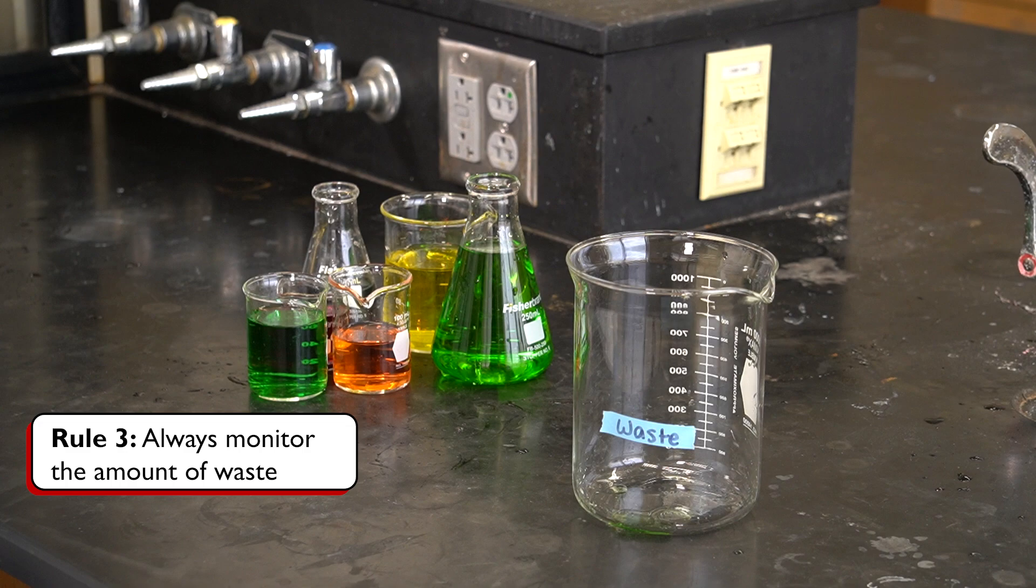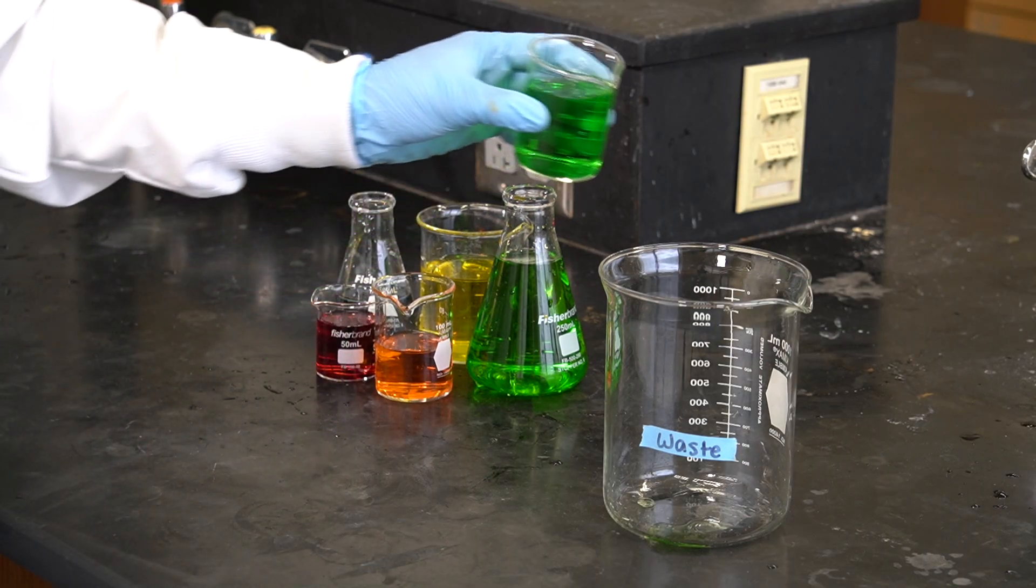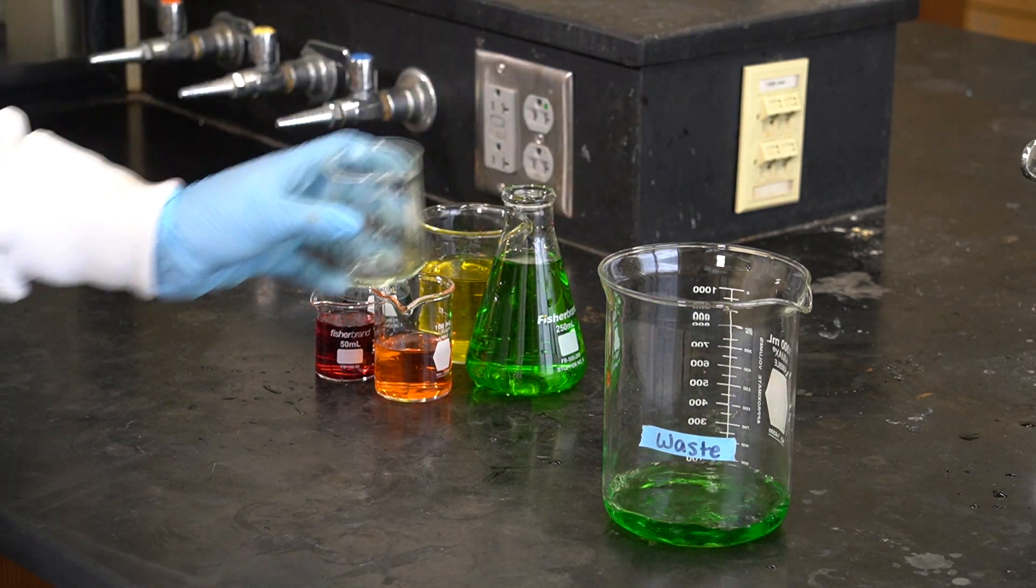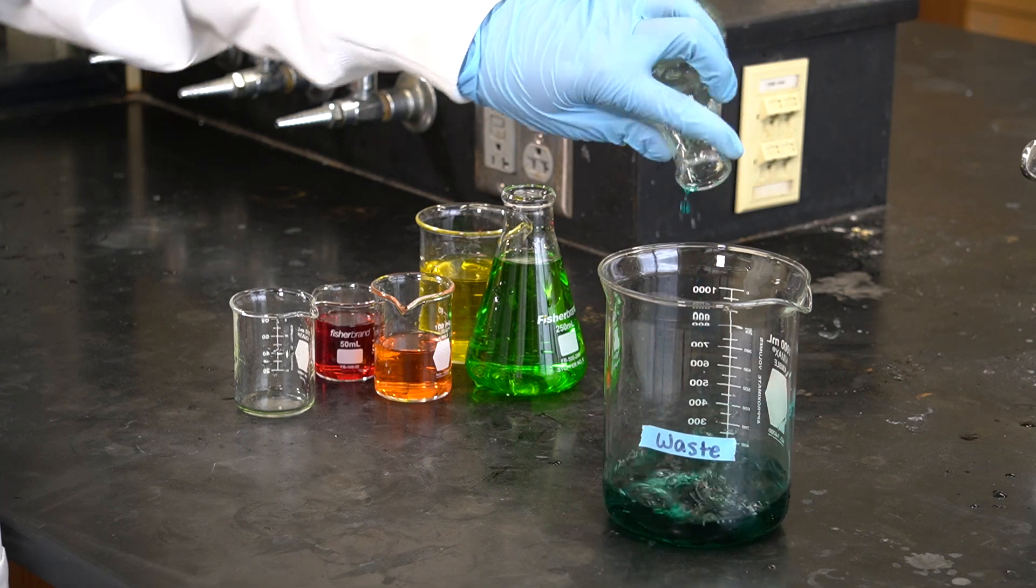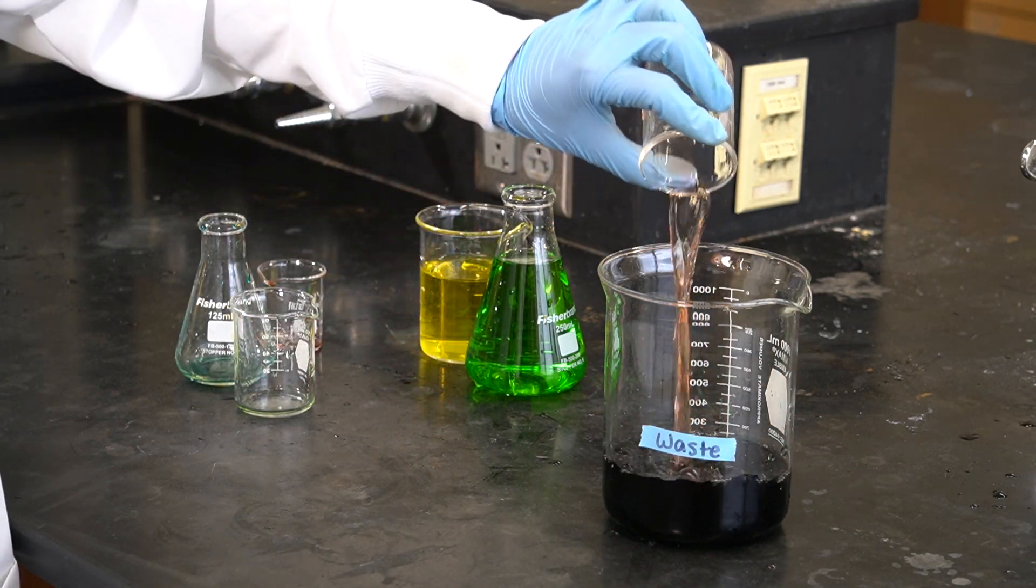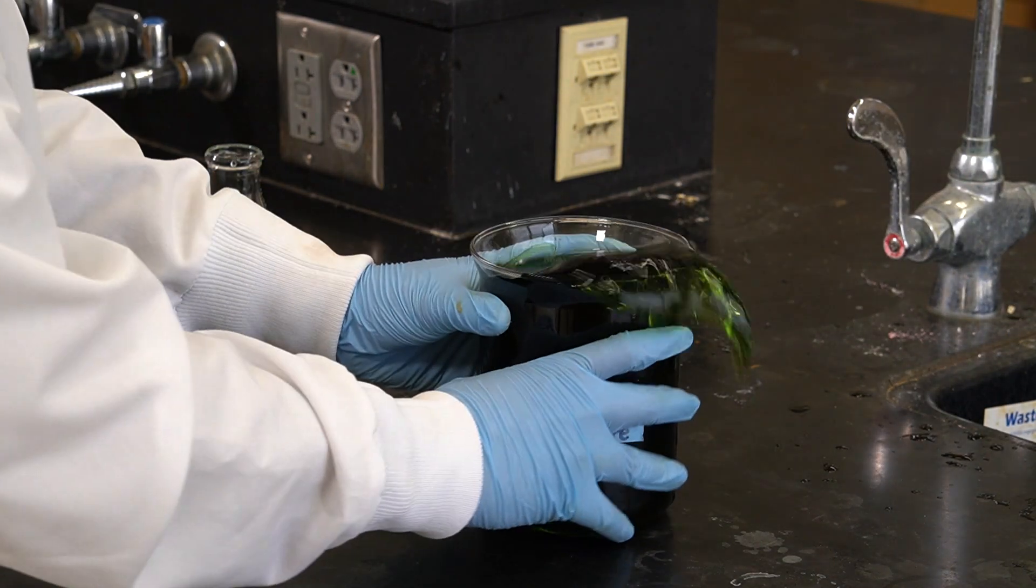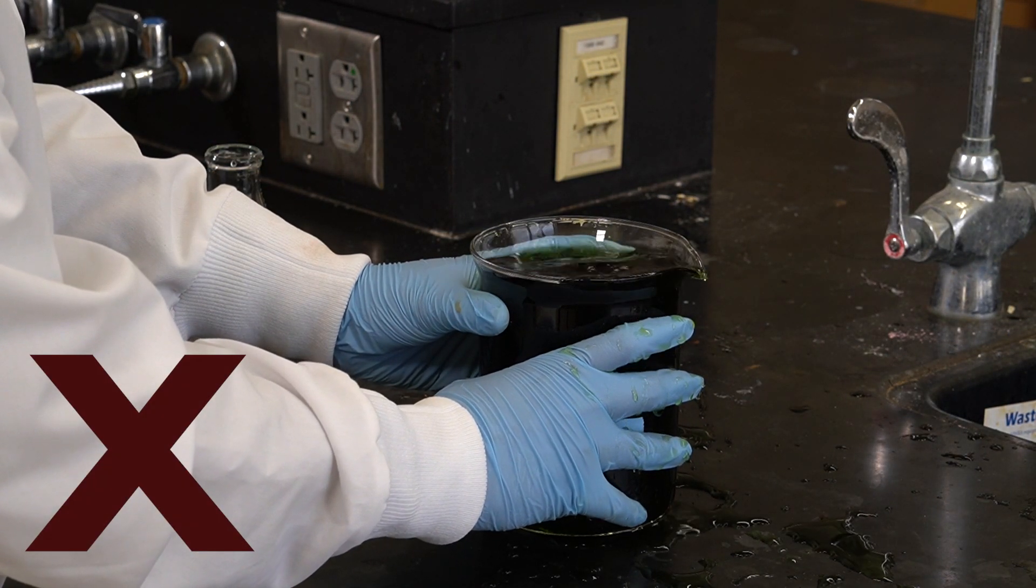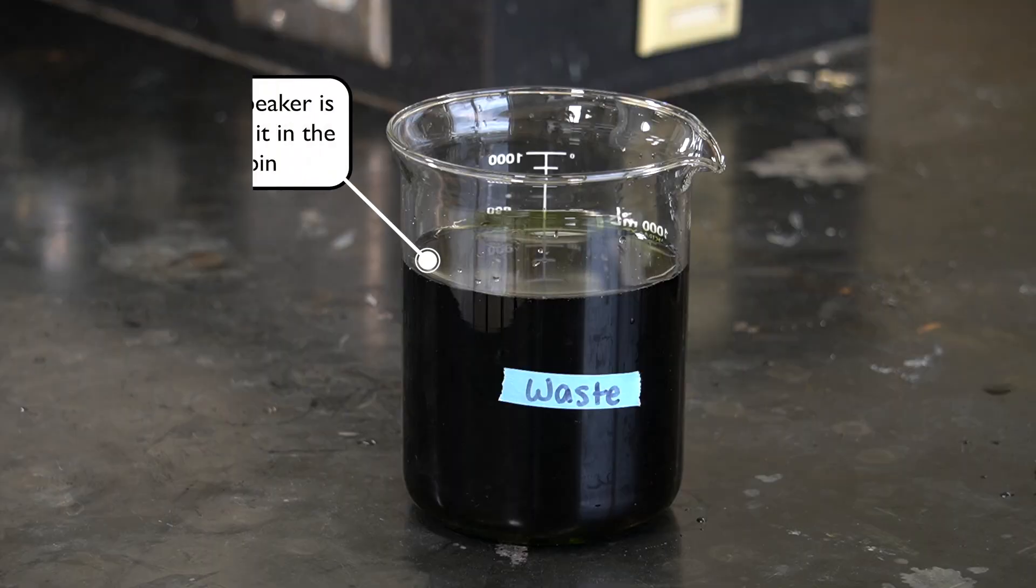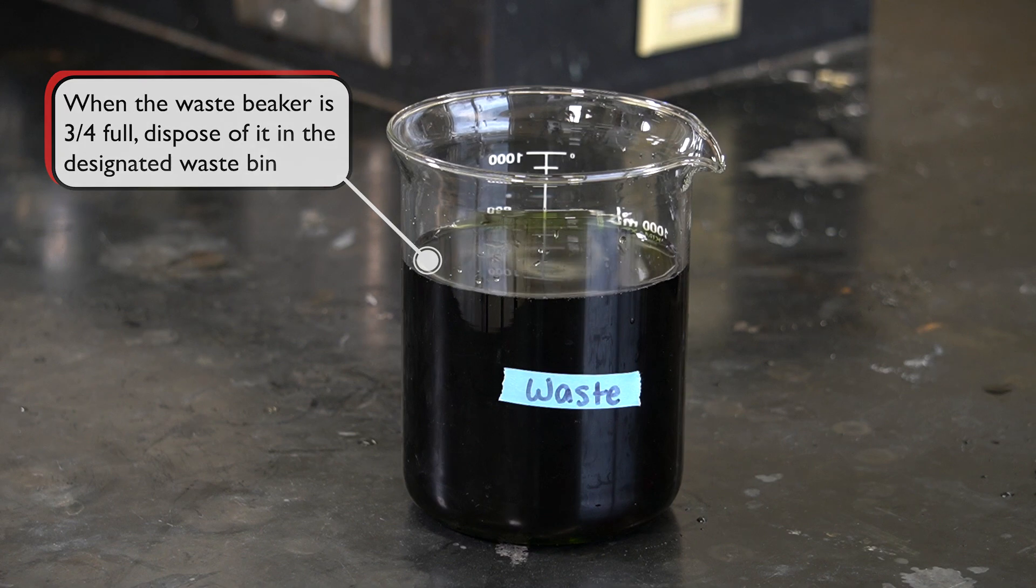Always monitor the amount of waste. During the experiment, we will gradually accumulate waste in the waste beaker. It is important to monitor the amount—you don't want it to fill completely, as it will make transporting the waste beaker difficult and increase the chance of a chemical spill in the lab. When the waste beaker is about three quarters or 75% full, it is time for you to make the trip to the larger waste container.